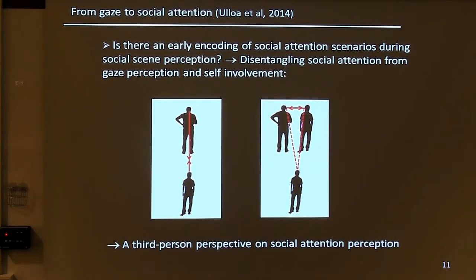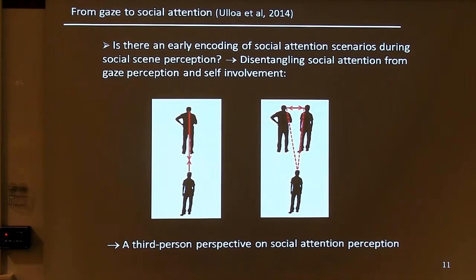We wanted to move on from gaze to social attention and examine whether there is an early encoding of social attention scenarios during social scene perception. In classical experiments, when you see faces with direct and averted gaze, social attention direction is confounded with gaze direction. But social attention — when you are in a third-person perspective observing a social scene — can also be decoded from the way people look at each other, establishing mutual attention or looking aside, without the confound of self-involvement.